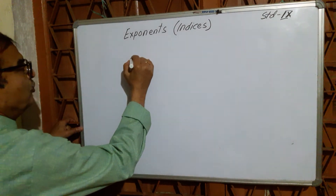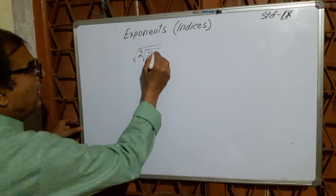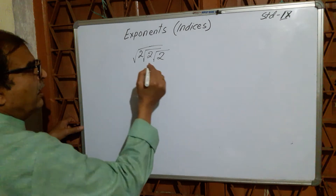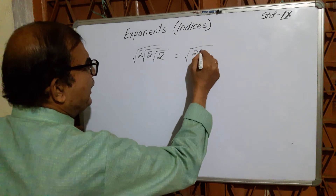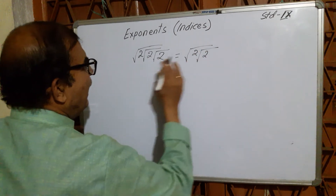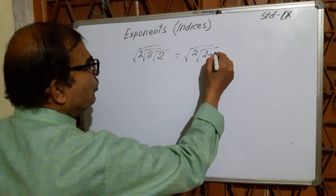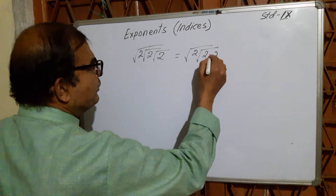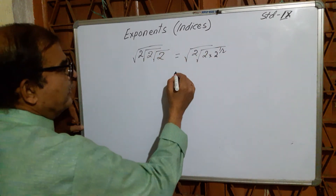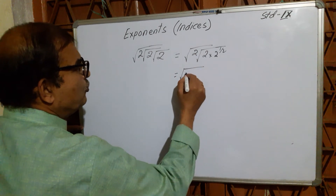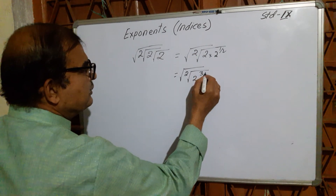Suppose the question is √2 · √2 · √2 · √2 — nested roots. The first is a square root, the second is also a square root, the third is another level. So this is 2 × 2^(1/2), giving 2^(3/2) after eliminating the first square root.